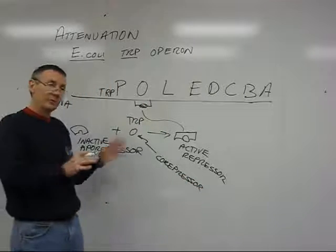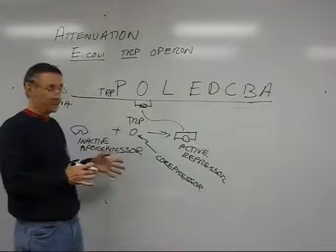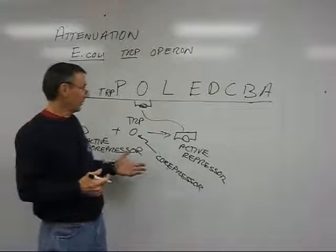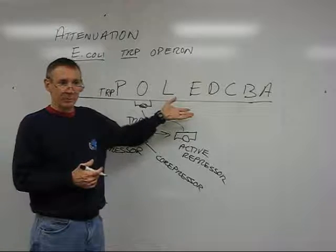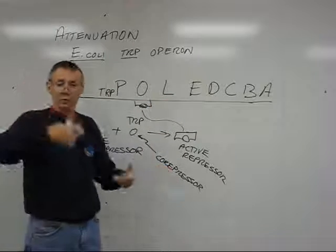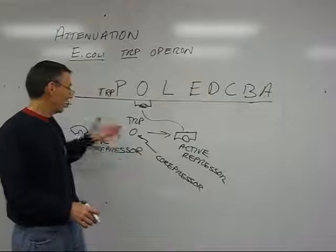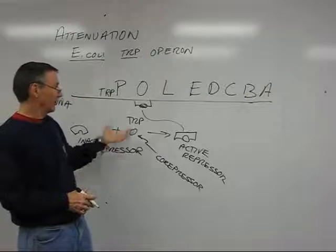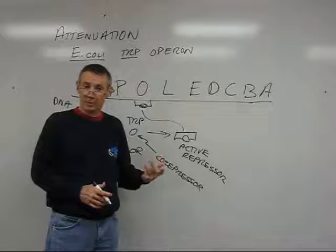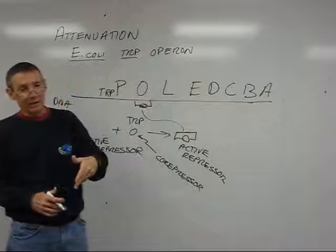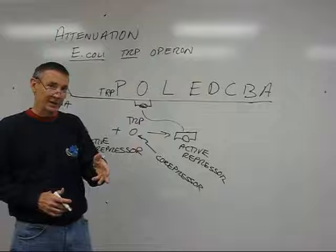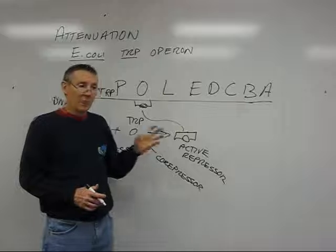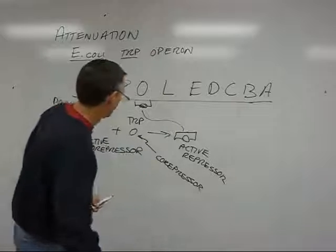You would think that this would be a sufficient system to regulate transcription of the operon — when you have high tryptophan levels, the repressor is active, you don't make more of the enzymes, you don't make more tryptophan. When tryptophan gets used up in translation and tryptophan levels are low, you have inactive aporepressors, and that permits RNA polymerase to bind and transcribe. However, there's a second level, a sort of fail-safe in the trp operon, to prevent production of the polycistronic messenger when there's high tryptophan content in the cell.